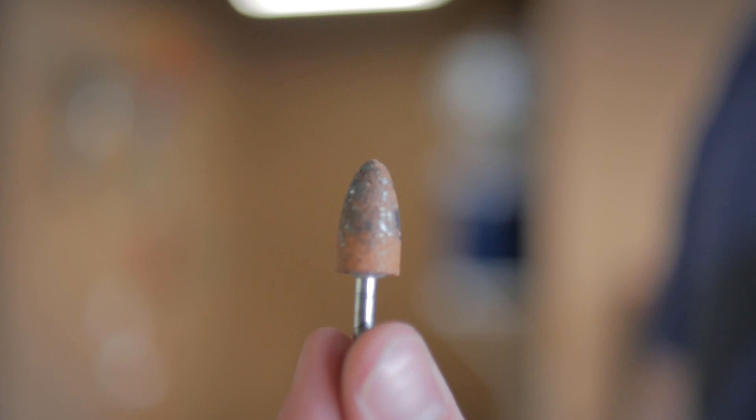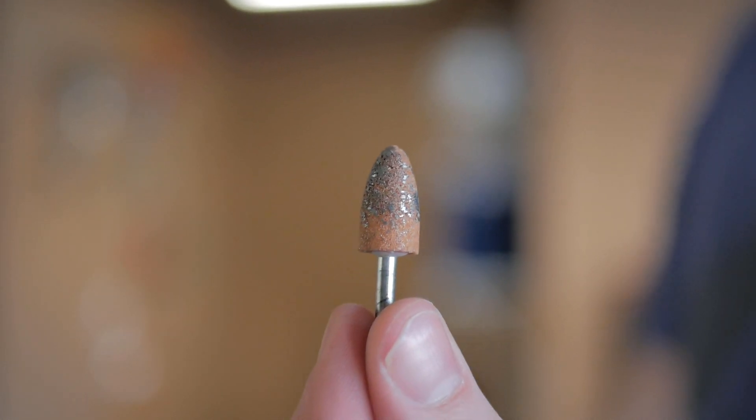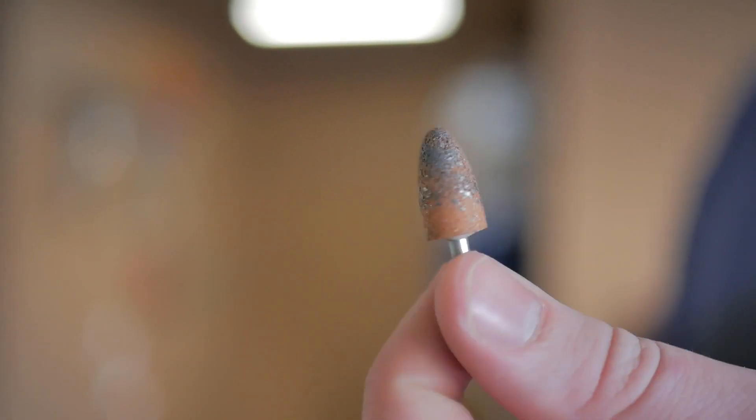Cool guys. Alright guys, so this is the Dremel grinder wheel thingy that we're gonna use. I don't know, the mushroom tip. Yeah, we're gonna put that on the Dremel and we are gonna sand them holes out.